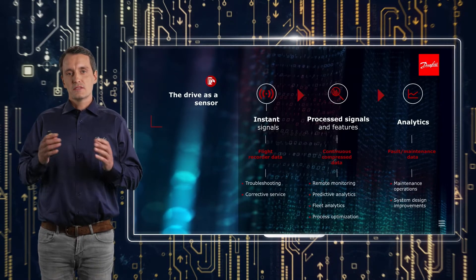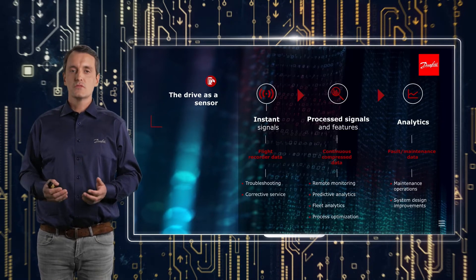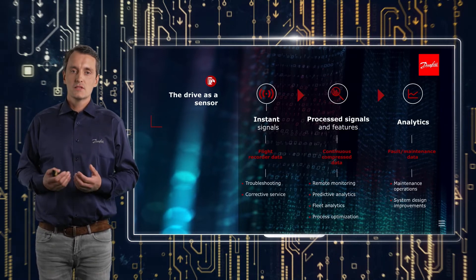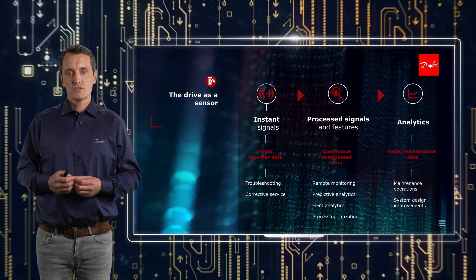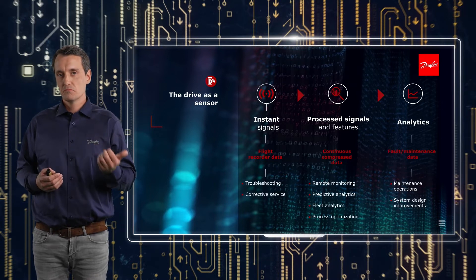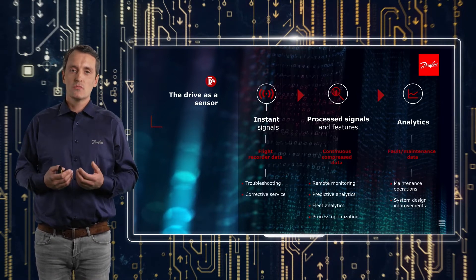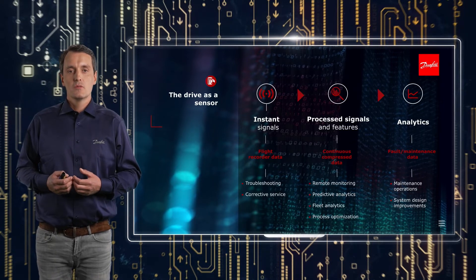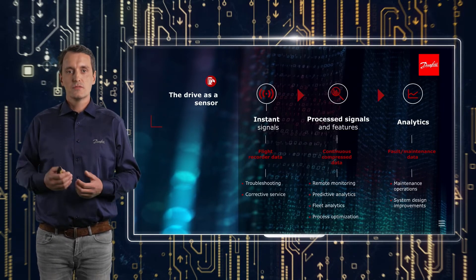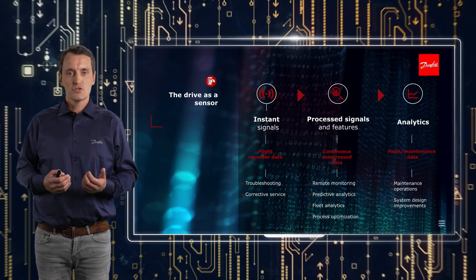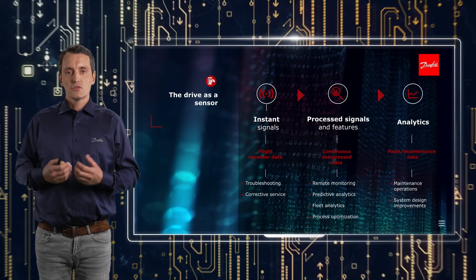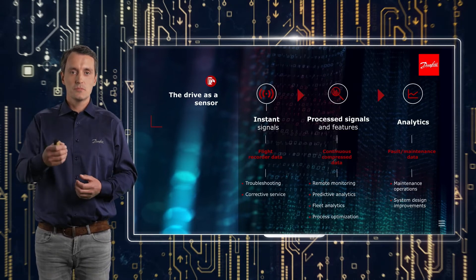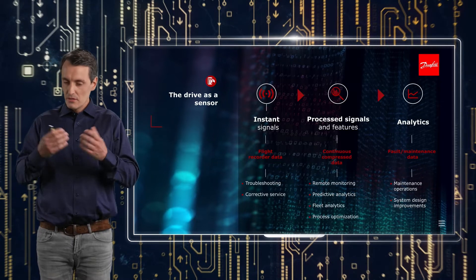If you look at the data that the drive has inside, you can group it into three boxes: instant signals, processed signals, and analyzed signals. Starting with instant signals — we have a bunch of sensors inside the drive, namely motor currents, voltages, and temperatures, which we use for motor control and protection. But we can also use it to monitor systems. We can also hook up additional sensors to the drive — for instance, vibration, pressure, flow, or humidity sensors. We can use all this information mostly for troubleshooting and corrective maintenance, because you can connect to the drive, take a snapshot of the signals, and this can tell you what to fix.